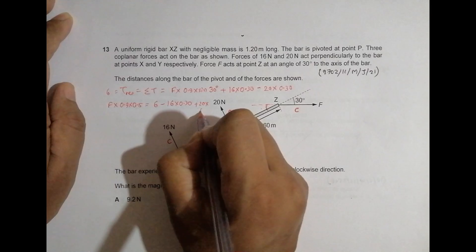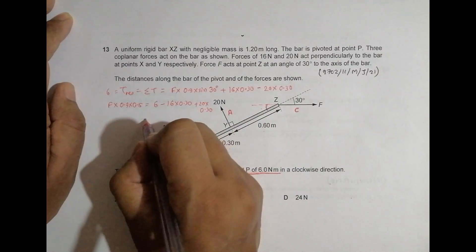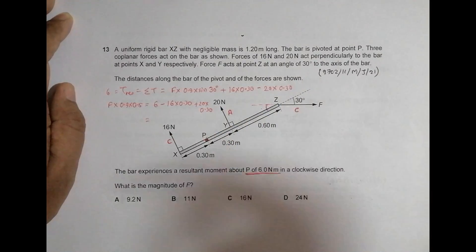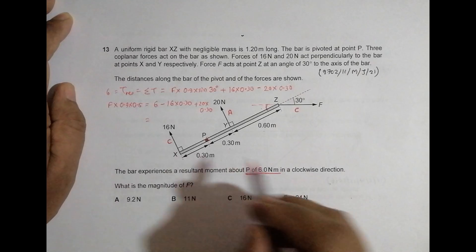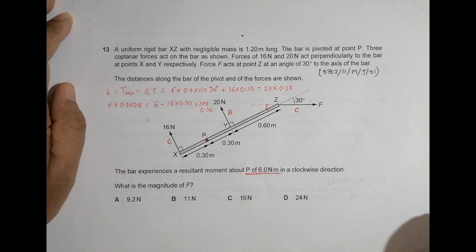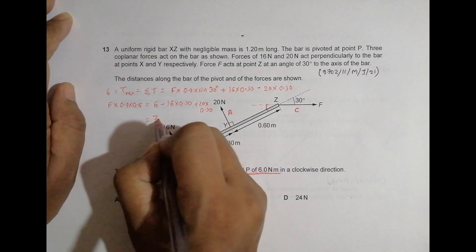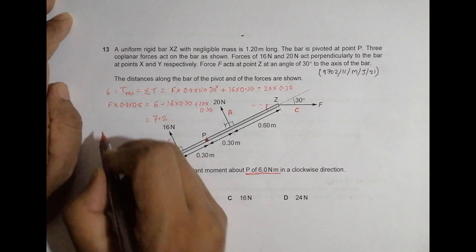Plus 20 into 0.30, which will be equal to, so the right side will be equal to 6 minus, in brackets, 16 into, okay this altogether becomes 7.2.